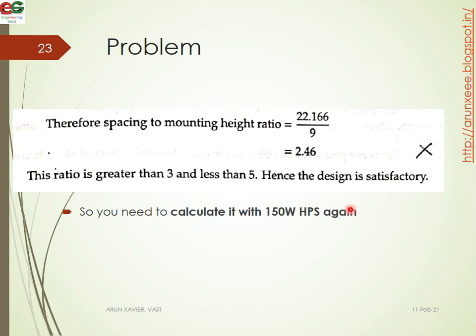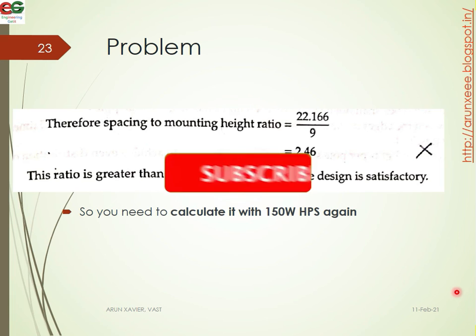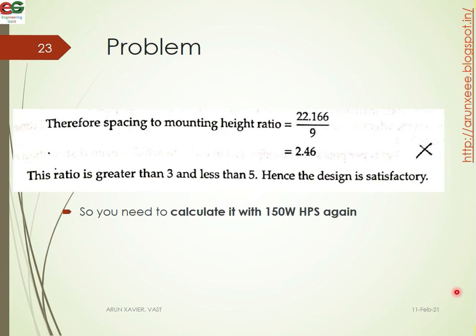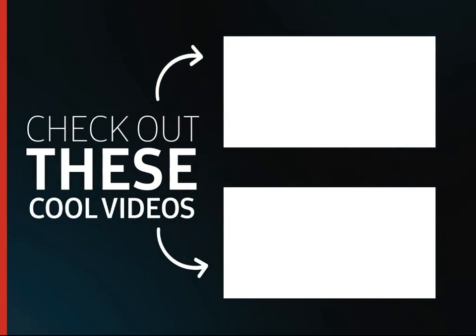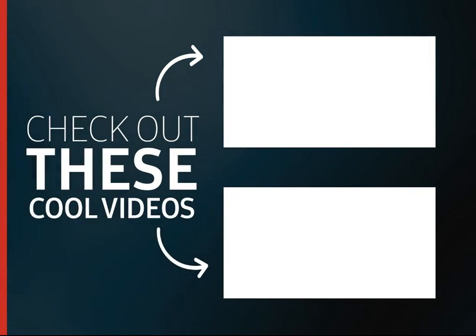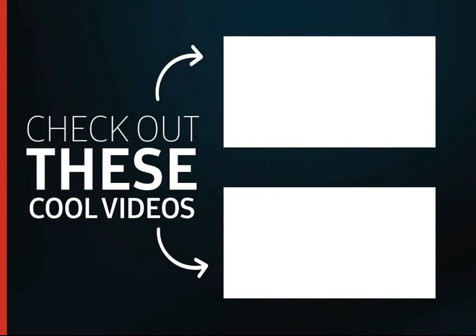We need to recalculate using a 150W HPS lamp and check that the spacing-to-mounting-height ratio falls within 3 to 5. We have checked the road lighting and the different types of lamps that we are using. Please subscribe to the channel and share this video with your friends. Thank you, see you all in my next video with another topic.